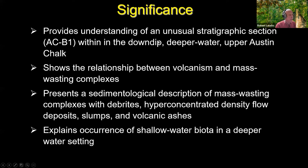I always like to give a slide showing the significance of what I'm doing. One bullet is to provide an understanding of an unusual stratigraphic section — the ACB1 unit within the down-dip, deeper water Austin chalk. This is the area away from outcrops, because in the Austin, the outcrops are not good analogs for production; you've got to go down-dip into the cores. We want to show the relationship between volcanism and mass wasting complexes — they're directly related. I want to present a sedimentological description of mass wasting complexes containing debris, hyperconcentrated density flow deposits, slumps, and volcanic ashes. One interesting outcome was answering a simple question: why was I seeing shallow water biota in the deeper water settings of the Austin chalk?